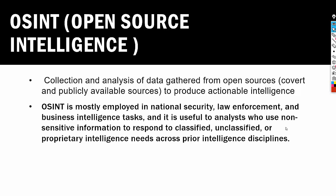OSINT is mostly employed in national security, law enforcement, and business intelligence tasks, useful to analysts who use non-sensitive information to respond to classified, unclassified, or appropriate intelligence needs. Sometimes there is a government order or a national security threat to track someone. They use this public information based on the request, collect it, and apply intelligence — for example: this person has been going to this location for the last three days, so we've identified a pattern and we predict he will be there at the same time tomorrow.